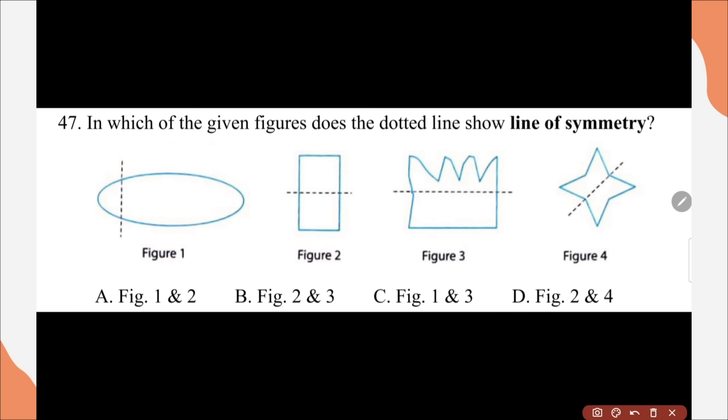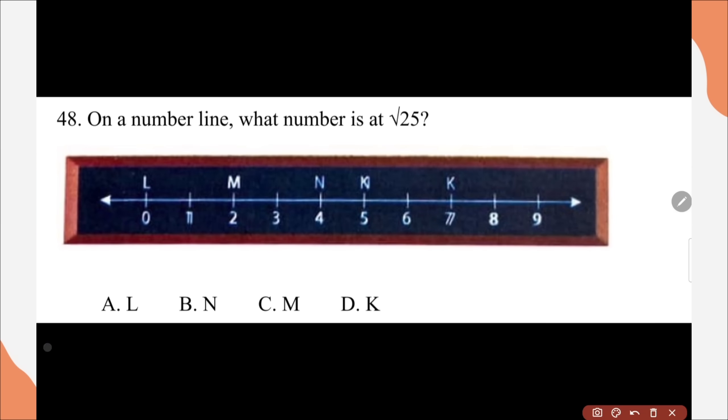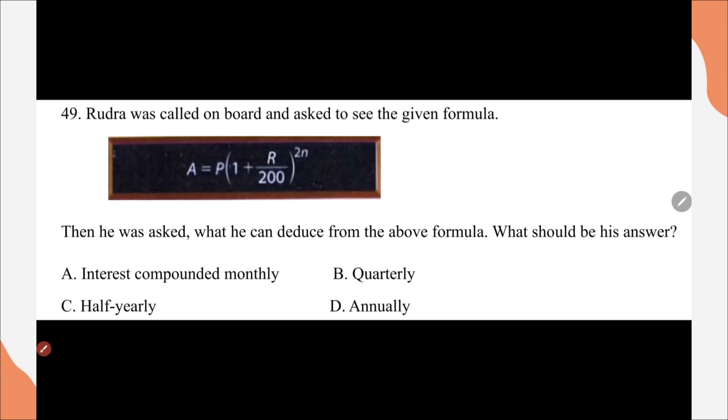Question number 47, in which of the given figure does the dotted line show symmetry? Correct option here is figure 2 and figure 4. Question number 48, on a number line, what number is at root 25? Correct option is option C, M. Question number 49, Rudra was called on board and asked to see the given formula. Then he was asked, what he can deduce from above formula? What should be his answer? Correct answer is, Halfway Lee.